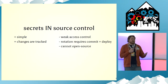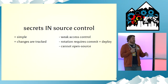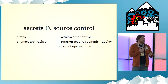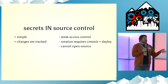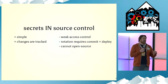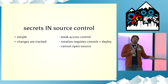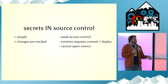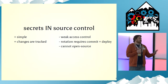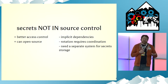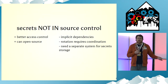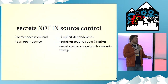I want to talk about a few patterns in source control before I get into Summon. The first is secrets in source control. I like to think of secrets as dependencies, so it makes sense to have them in source control. But the problem is that you have really weak access control — people who have access to the repo have access to all your secrets.